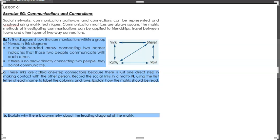Social networks, communication pathways and connections can be represented and analyzed using matrix techniques. Communication matrices are always square. We will never deal with an M by N, it's always an M by M or an N by N. The numbers will always be the same, so it's going to be a square matrix. The matrix methods of investigating communications can be applied to friendships, travel between towns and other types of two-way connections.